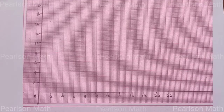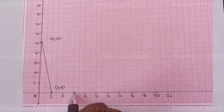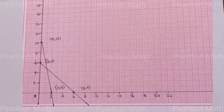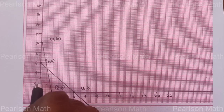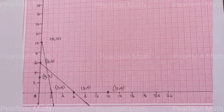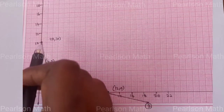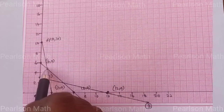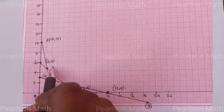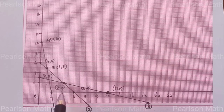Next, draw the graph. Plot x-axis and y-axis. For the first equation, points (2, 0) and (0, 10) — join the line. For the second equation, points (6, 0) and (0, 6) — join the line. For the third equation, points (12, 0) and (0, 3) — join the line. The intersection of equations 1 and 2 gives point B at (1, 5).